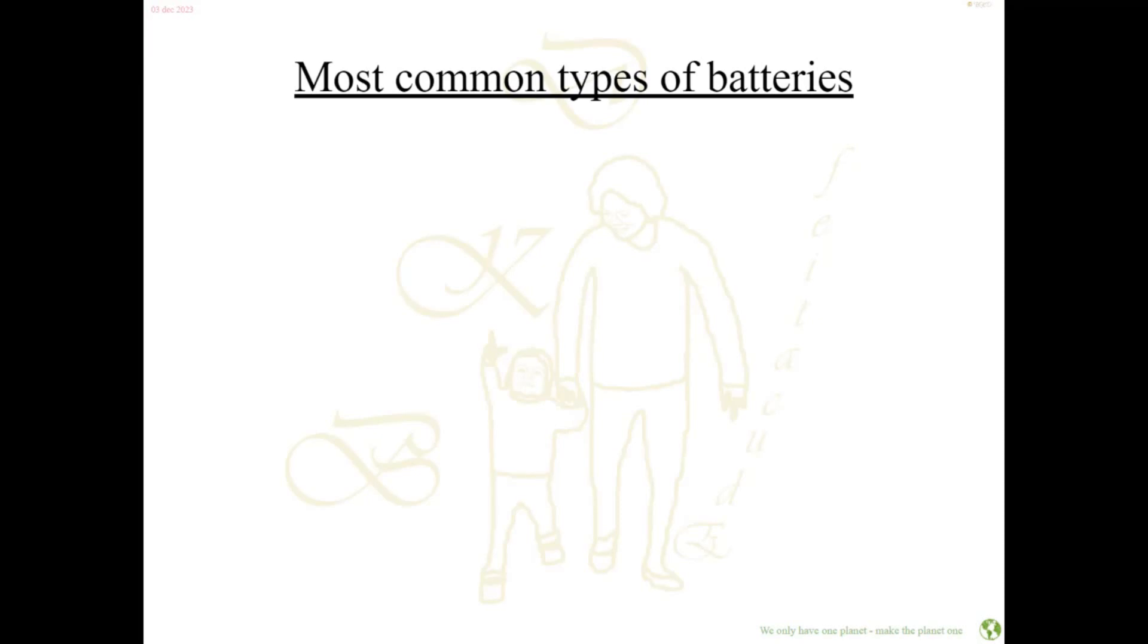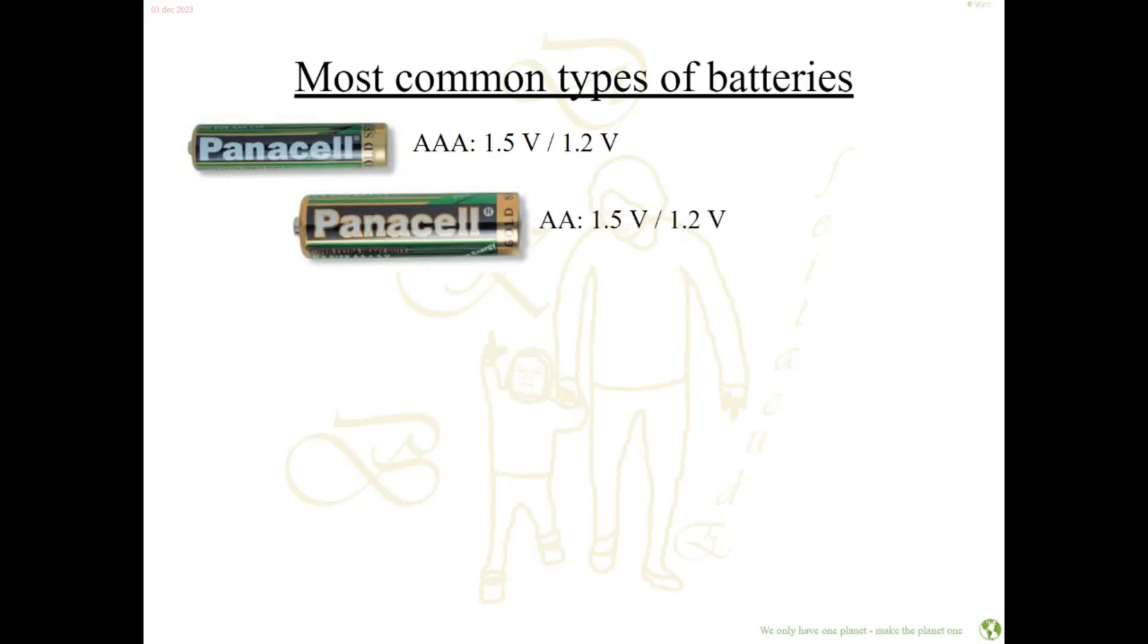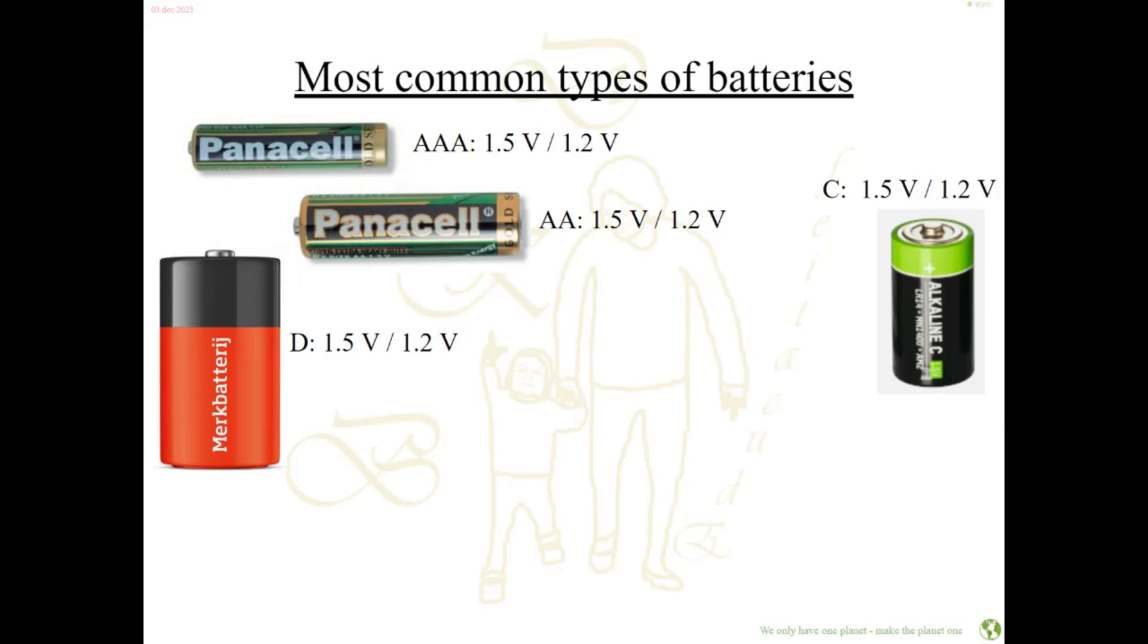Here's an overview of the most common types of batteries. We have the triple-A battery, which in non-rechargeable form is 1.5 volts and 1.2 volts if it's rechargeable because of different metals. Then we have the double-A, also 1.5 volts or 1.2 volts, just a little bit bigger. We have the C battery at 1.5 volts or 1.2 volts, again a bit larger so you have more metal and electrolyte and can use the battery longer. And we have an even bigger one, the D battery, at 1.5 volts or 1.2 volts.